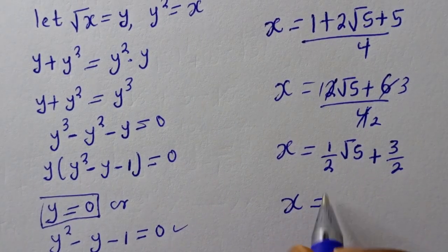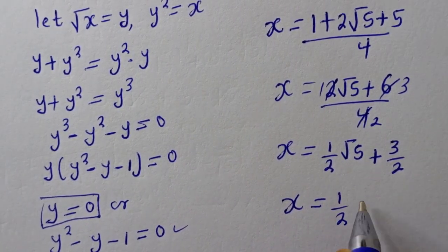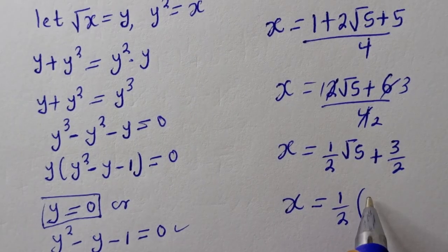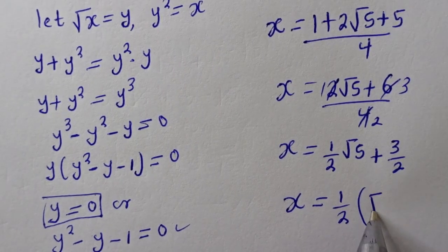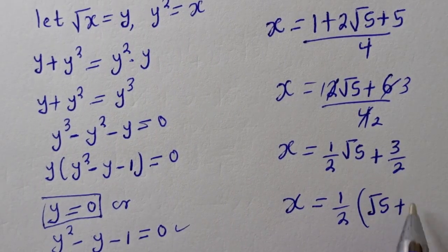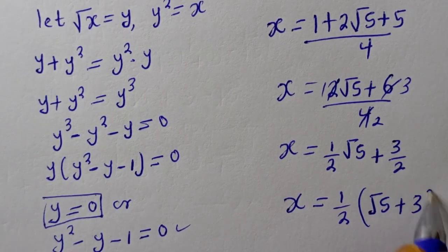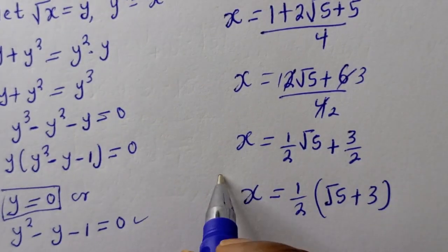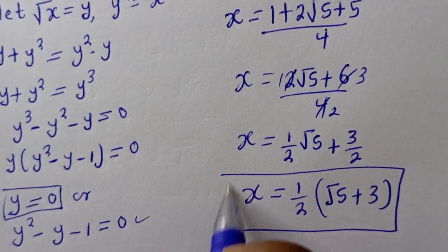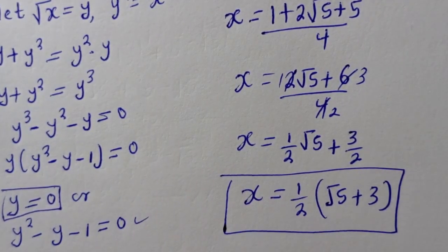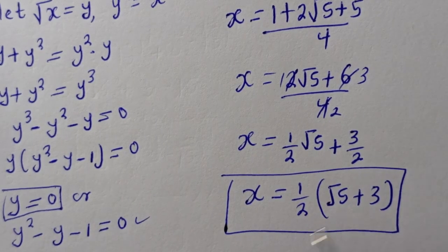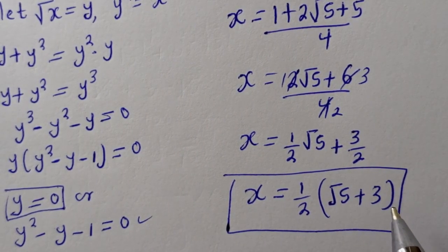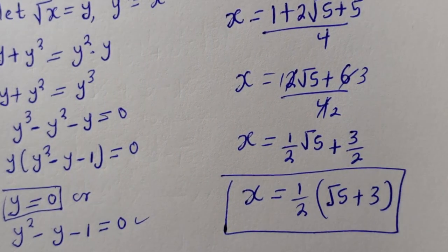Therefore s equals one half times bracket square root of 5 plus 3, and this is the final answer. If you enjoyed the class, please don't forget to like, share, comment, and subscribe. Bye-bye!